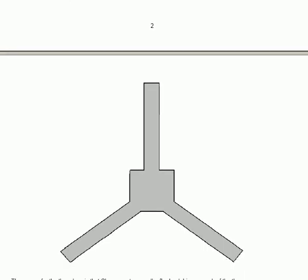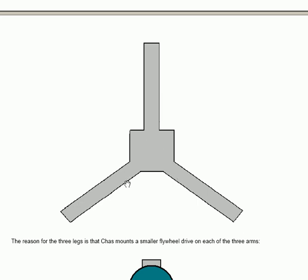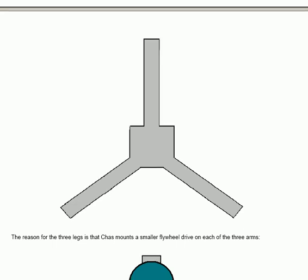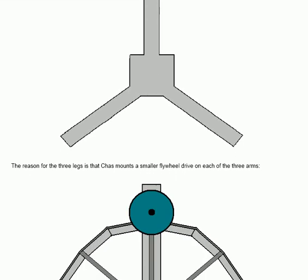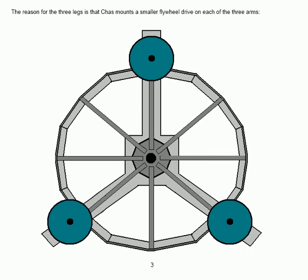This is the shape of the base plate or foundation strip if you prefer. The reason for the three legs is that Chas mounts a smaller flywheel drive on each of those three arms to give an arrangement like this. The central shaft here in the middle is stationary and the rest of the flywheel rotates around that, driven by these three smaller drive motors.